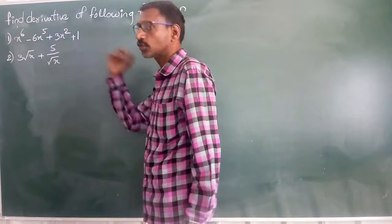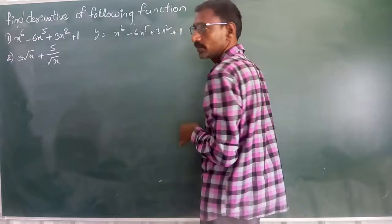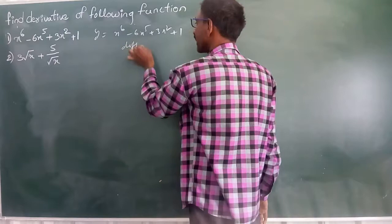Find the derivative of the following. First you will see only first one. So y is equal to x to the power of 6 minus 6x to the power of 5 plus 3x squared. As usual, differentiate with respect to x.